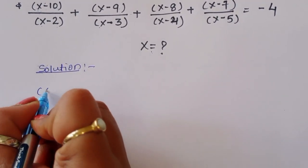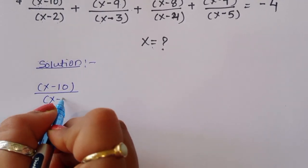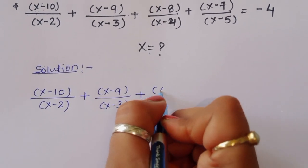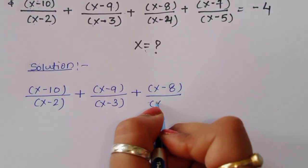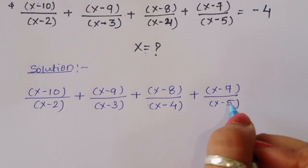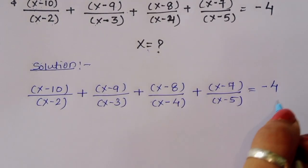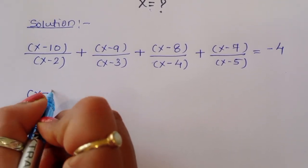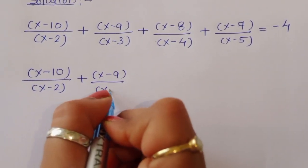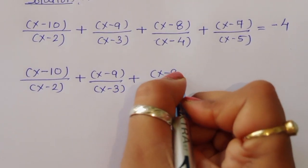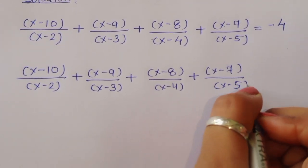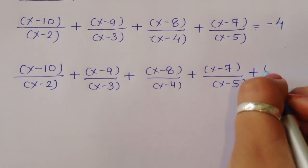The given equation is (x minus 10)/(x minus 2) plus (x minus 9)/(x minus 3) plus (x minus 8)/(x minus 4) plus (x minus 7)/(x minus 5) equals minus 4. We move the minus 4 to the left side, so the equation becomes equal to 0.